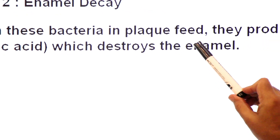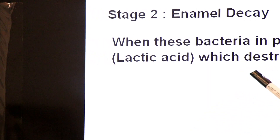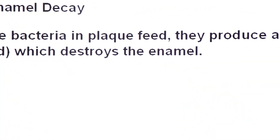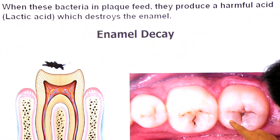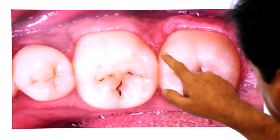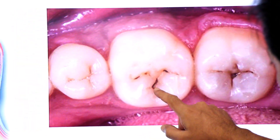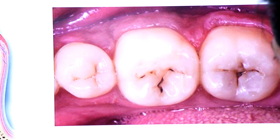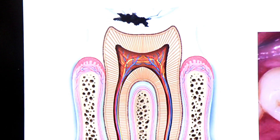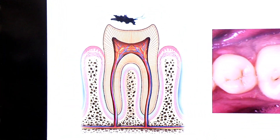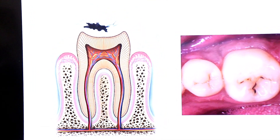When these bacteria and plaque feed, they produce a harmful acid — lactic acid — by fermentation, which destroys the enamel. This is the hardest substance of the body, enamel, that covers the crown of the tooth. And here you see a cavity hole in the enamel. So this stage is called enamel decay. If left untreated, if the patient is ignoring it, it will move to the third stage.